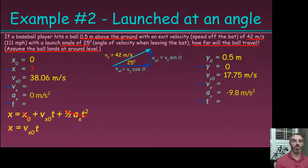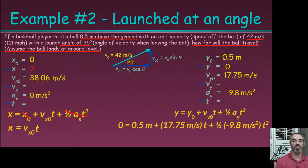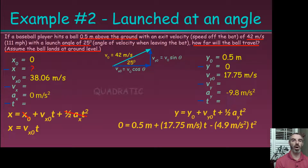The problem is we have two unknowns: x and t. But the time is the same in both the horizontal and vertical lists — it's the total flight time of the ball. We can solve for time using the second kinematic equation in the vertical direction. Plugging in the numbers, we get: 0 equals 0.5 plus 17.75t plus one half of negative 9.8 times t squared. This gives us a quadratic, which we can't solve with basic algebra alone.